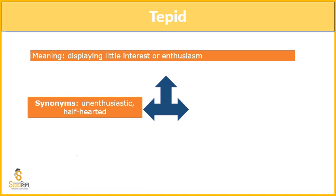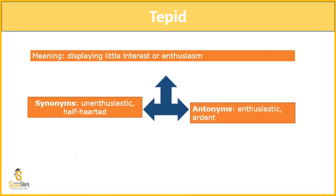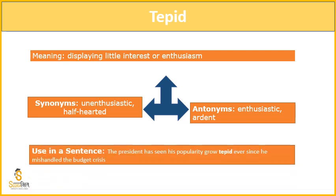Synonyms for tepid are 'unenthusiastic' and 'half-heartedly' — meaning not doing something with full mind or effort. The antonyms are 'enthusiastic' and 'ardent' — ardent means becoming more excited and passionate about something. The example sentence is: 'The President has seen his popularity grow tepid ever since he mishandled the budget crisis' — meaning if a president fails to handle a crisis, his popularity goes down and people's response to him becomes tepid.